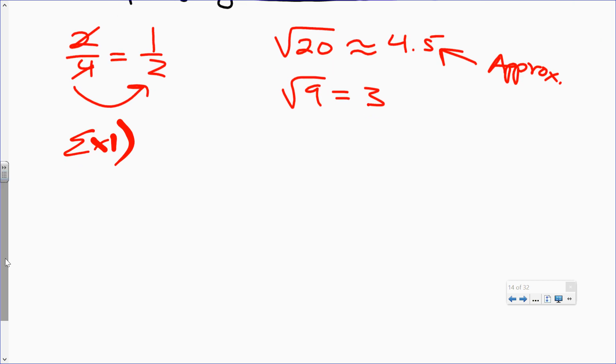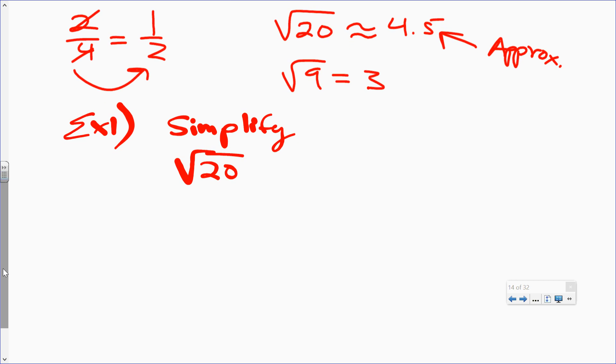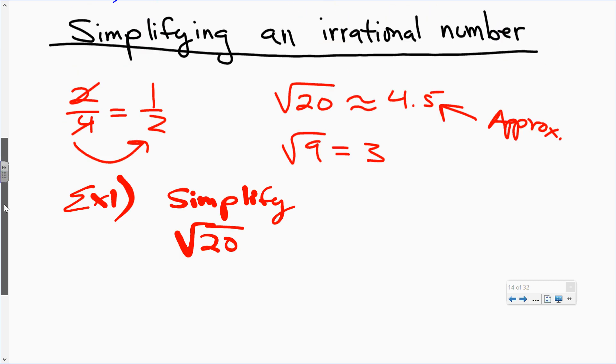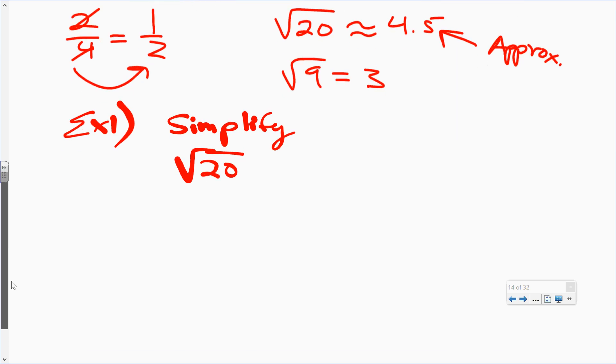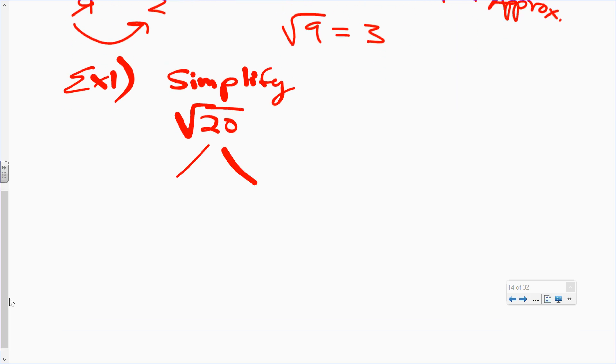Square root of 20. Let's simplify the square root of 20. In other words, I don't want the approximate answer here. I don't want you to just simply type this in the calculator and then round to the nearest tenth. Here's what we're going to do. If it's an irrational number, square root of 20, we're going to break it down into two separate square roots that are factors. And we're going to make sure one of them is a perfect square.